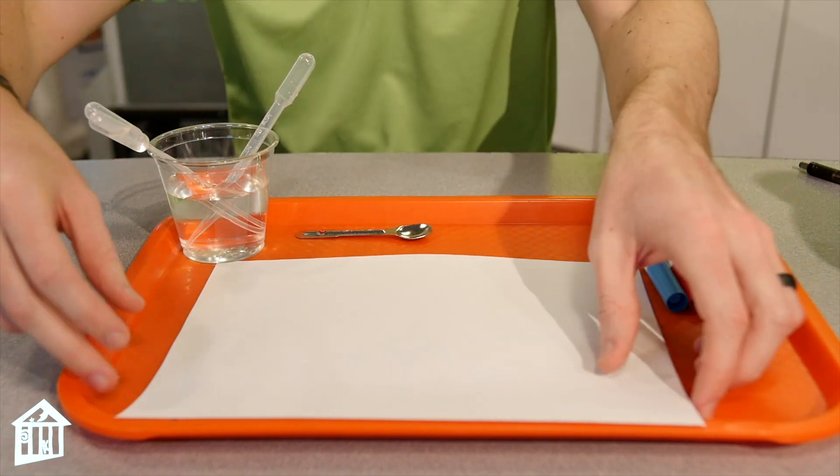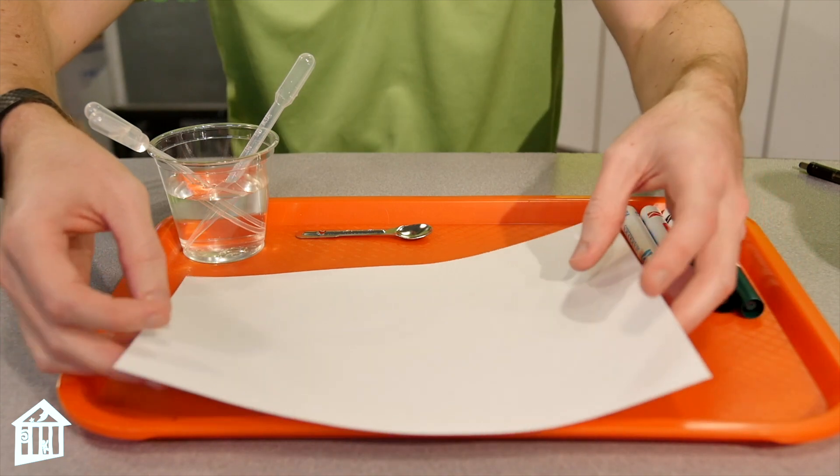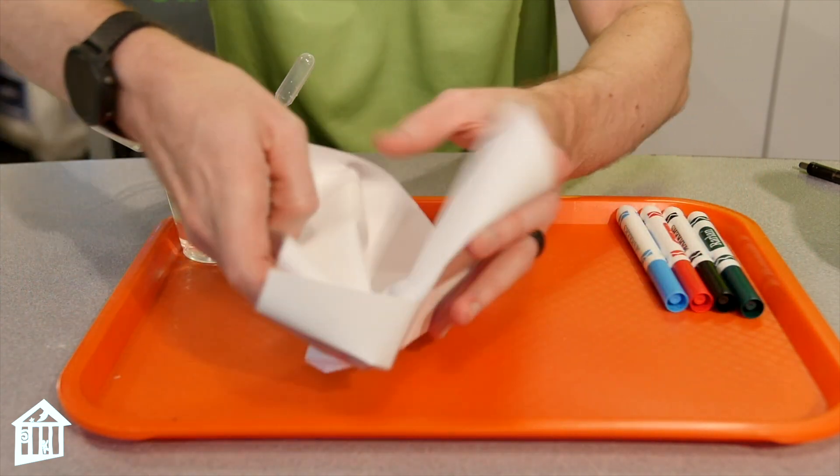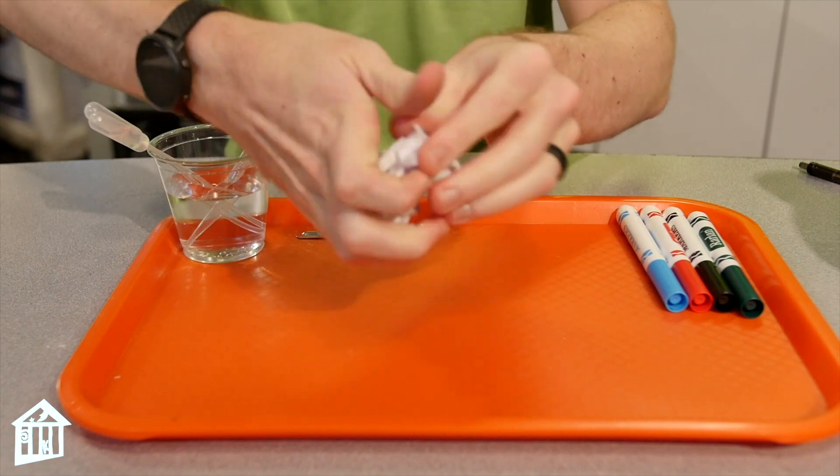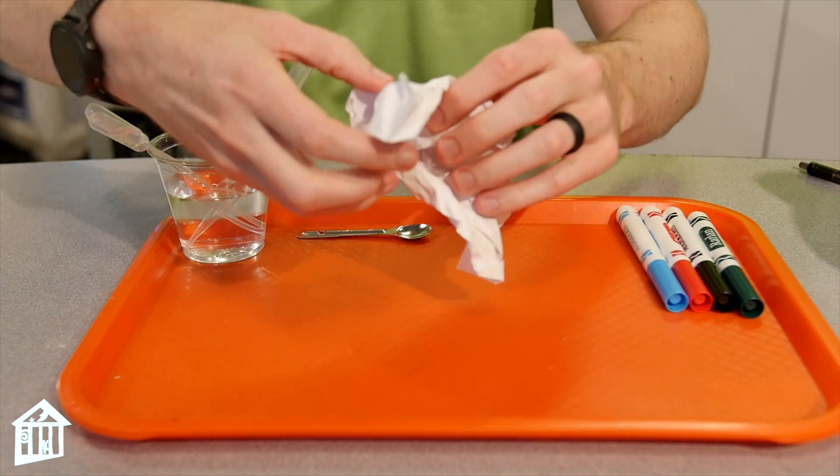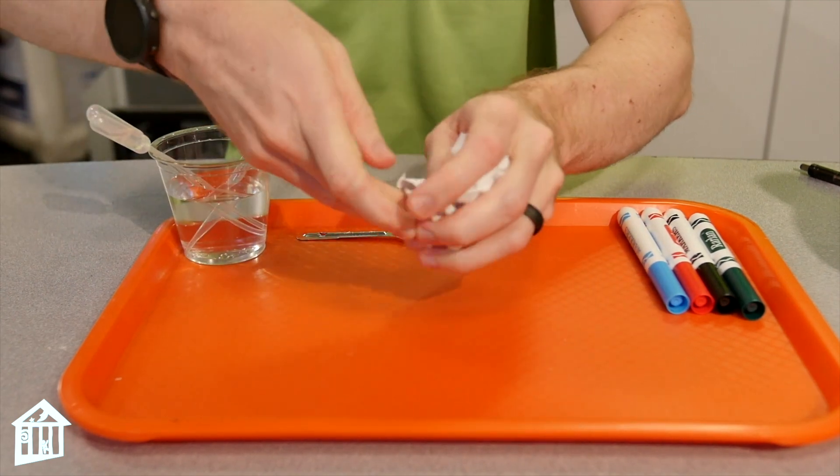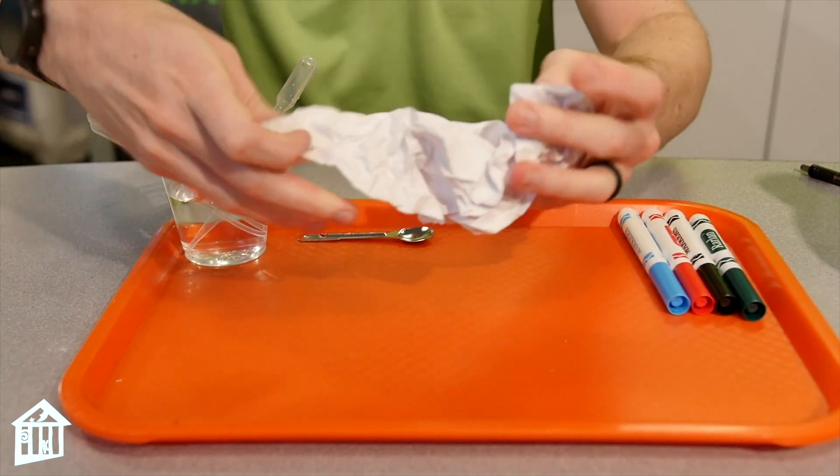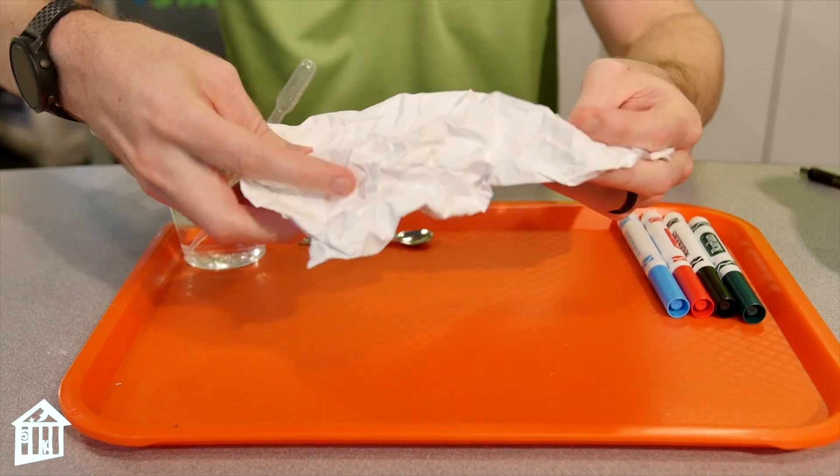Now the first step is to take your sheet of paper. I actually want you to crumple it up into a little ball. So crumple it up, unroll it a little bit. We want as many crinkles and creases as possible, and then we'll crinkle it again and then we're gonna unroll it.